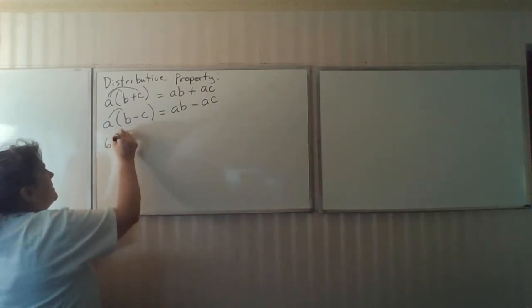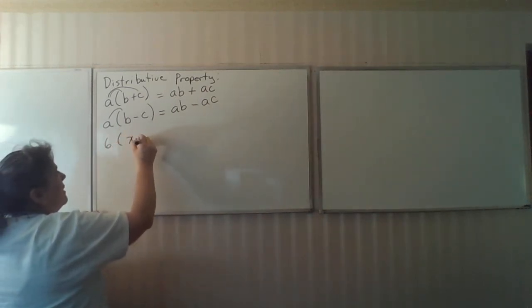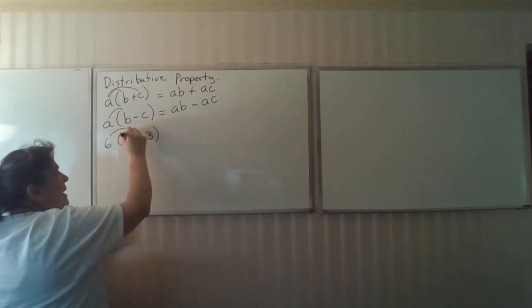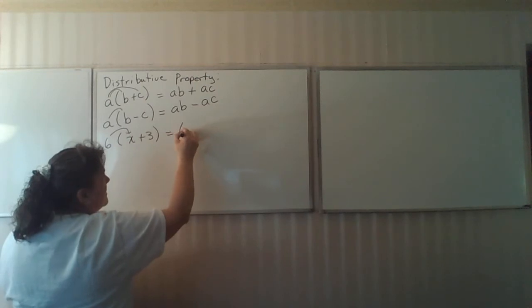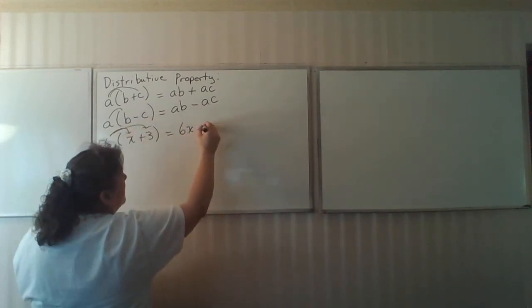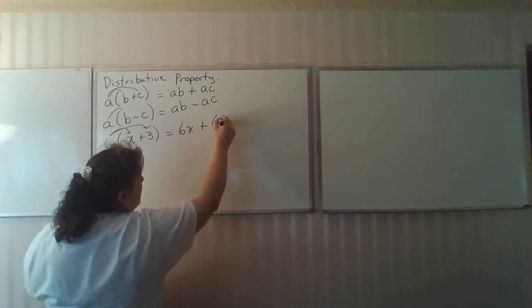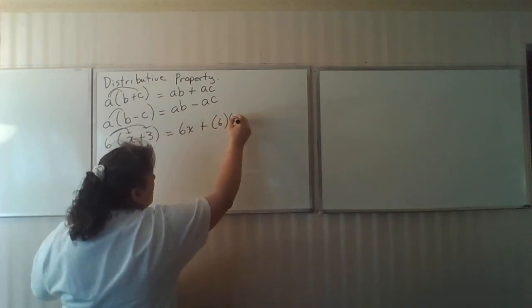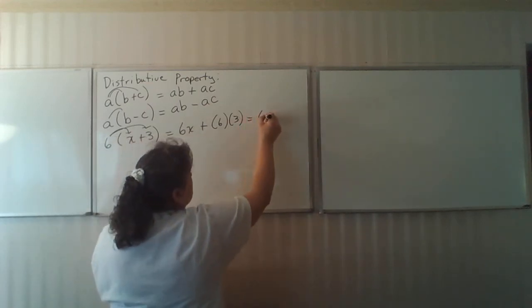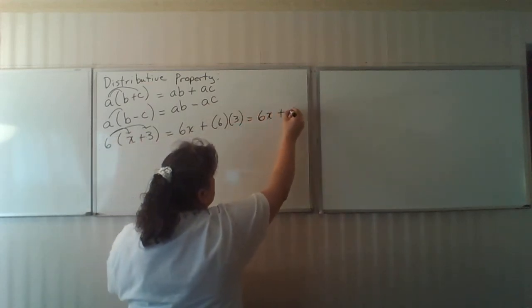Now let's look at some actual numbers. 6 times X plus 3. 6 times X is equal to 6X, and then 6 times 3 is a positive 18. This equals 6X plus 18.